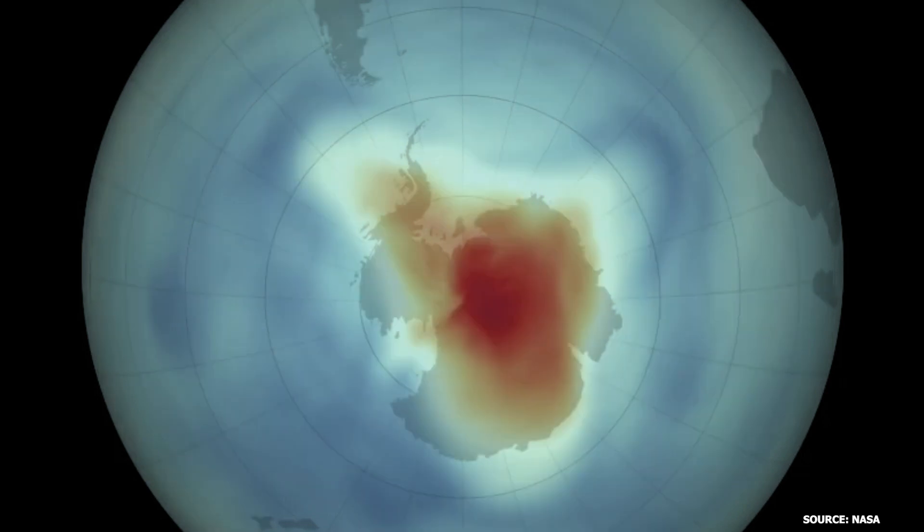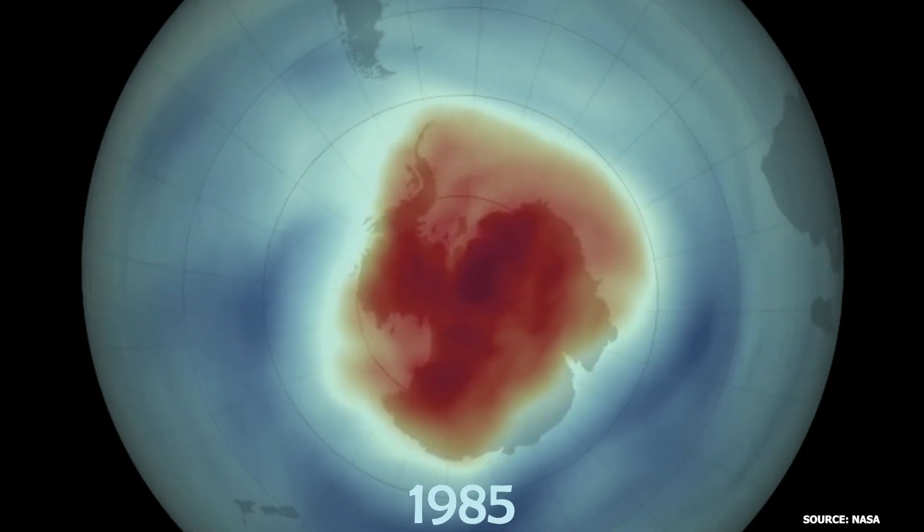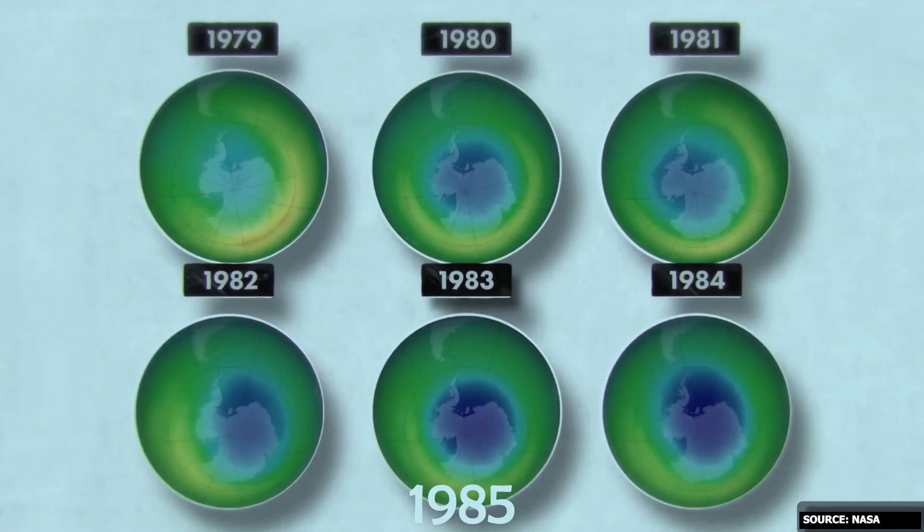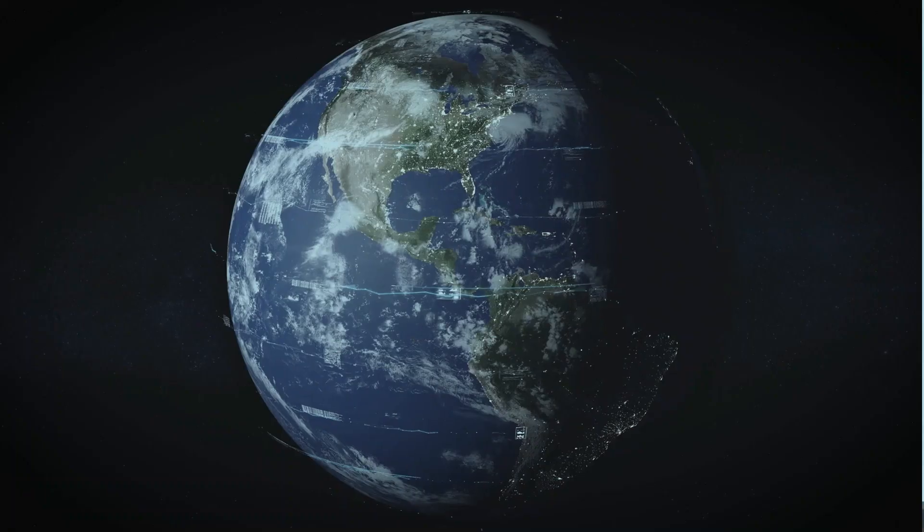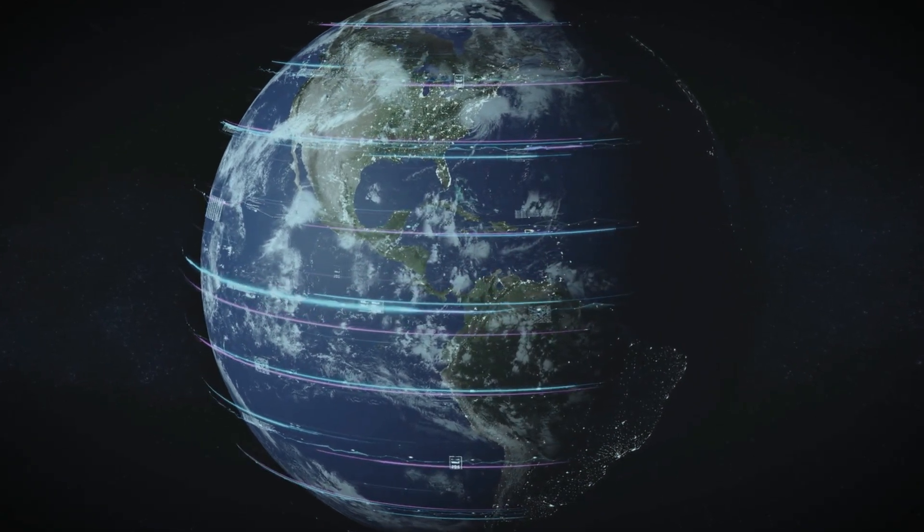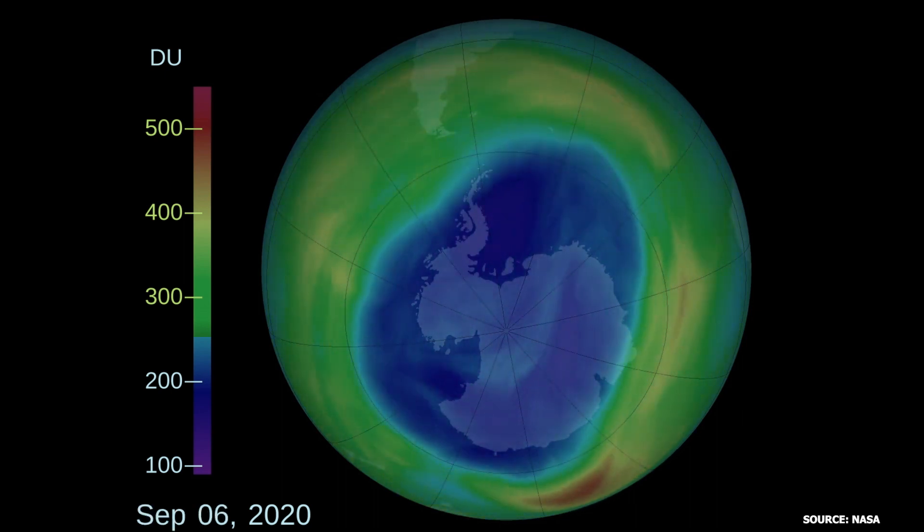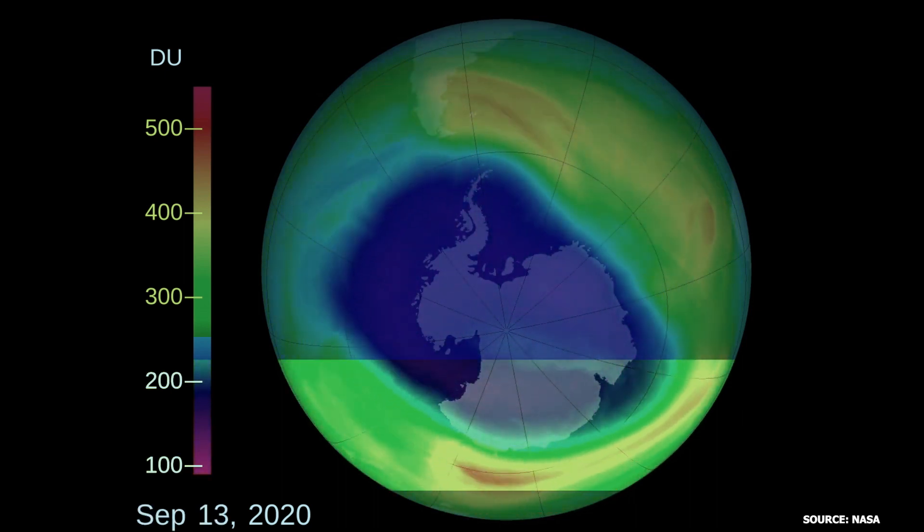When he alerted NASA, they confirmed his findings with disturbing visuals of the rapidly expanding ozone hole. By August 1985, maps of this ozone hole were made public. Despite the term hole, it's more an area where the ozone layer has significantly thinned. The measurements, typically between 300 to 500 Dobson units, had areas falling below 200 Dobson units.